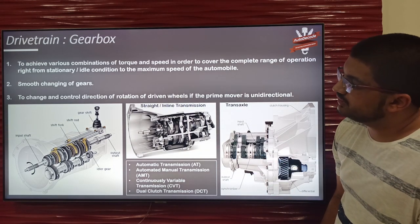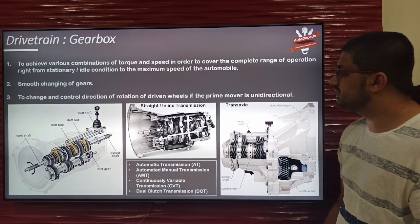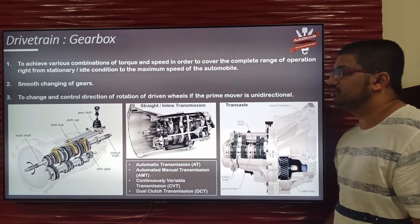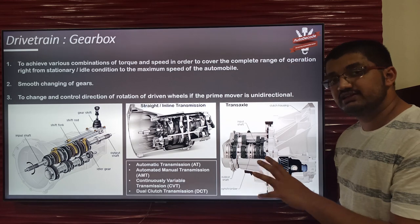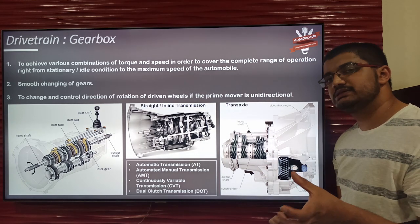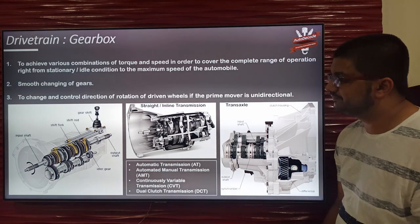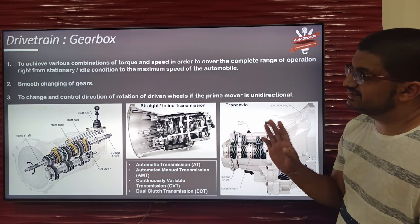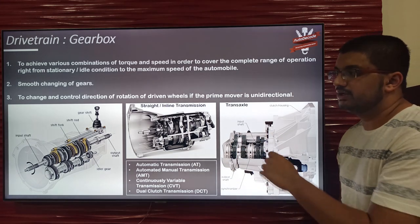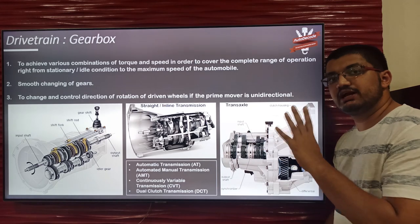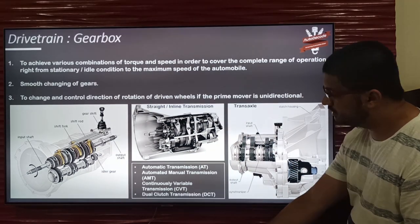The third function is to change and control the direction of rotation of driven wheels if the prime mover is unidirectional. There is a reverse gear in the manual transmission which enables the driven wheels to rotate in the opposite direction to propel the vehicle in reverse. These are the basic three functions of a gearbox. There are also various types of gearboxes — manual transmissions and others.